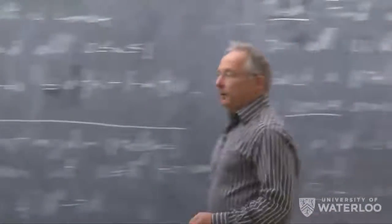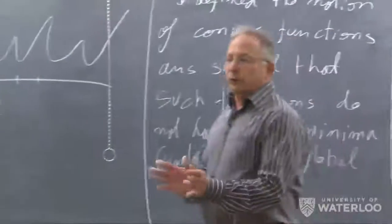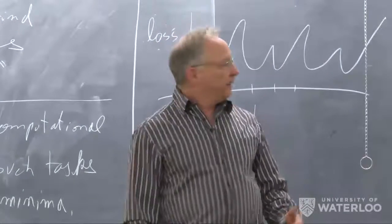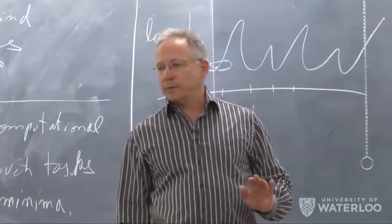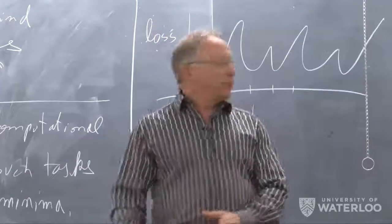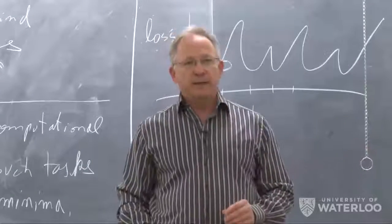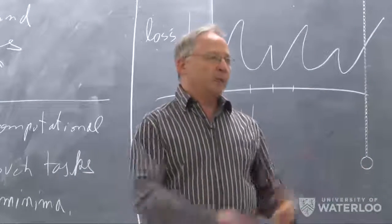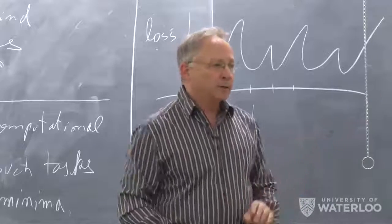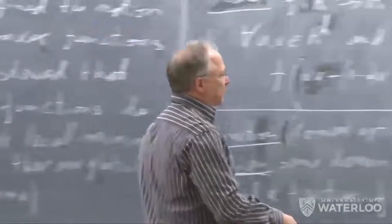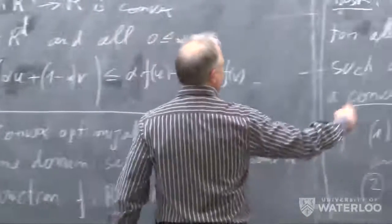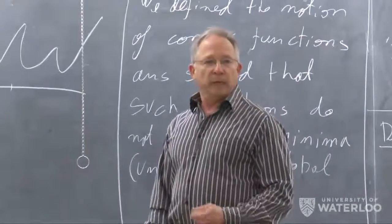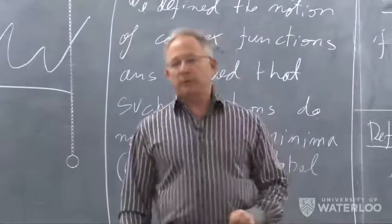In optimization theory there are many tools to solve convex optimization problems. So once we translate our learning problems into convex optimization problems, we can rely on a whole body of tools developed in the optimization community. What I want to discuss now is: when do learning problems turn into convex optimization problems?